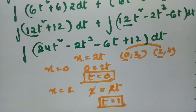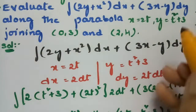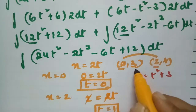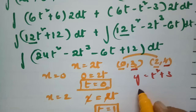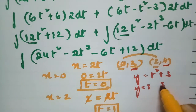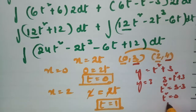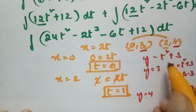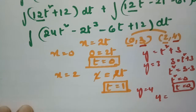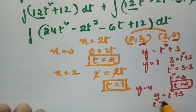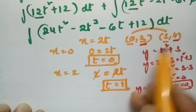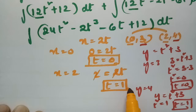Alternatively, using y = t² + 3 with y-values 3 and 4: if y = 3, then t² = 0, so t = 0. If y = 4, then t² = 1, so t = 1. In both cases we get the initial value t = 0 and final value t = 1.